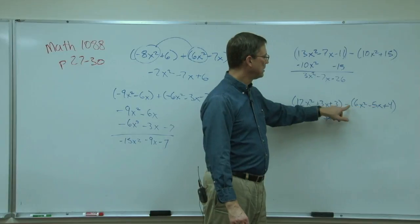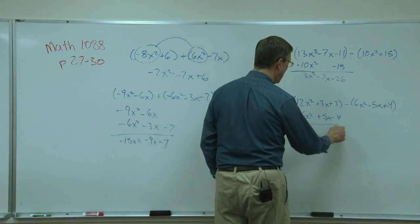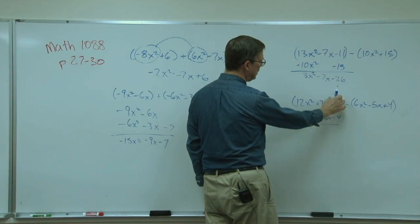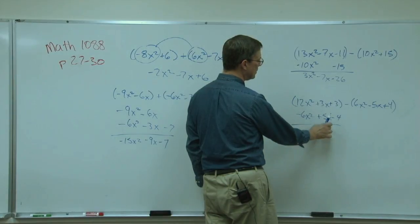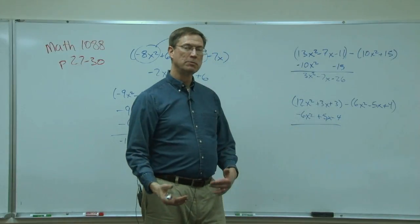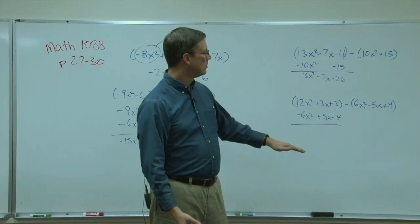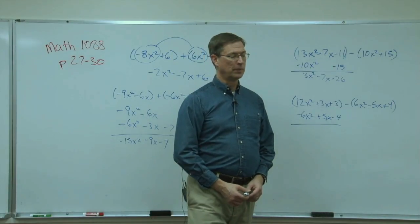Now I can add straight down. These are like terms all lined up here, and so we can combine these and get 6x². And then you can see the answer to that - you're adding 3 + -4. Subtracting the smaller from the larger, keep the sign of the larger. I'll let you finish that one. There's a few others on page 30 that are like that as well.